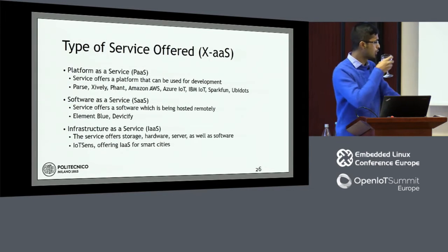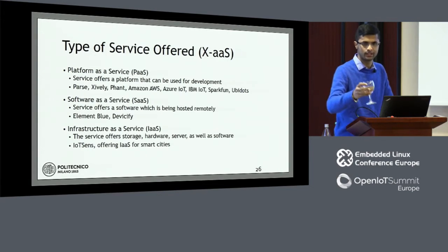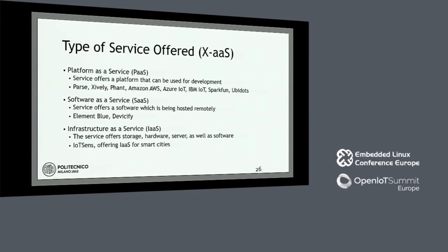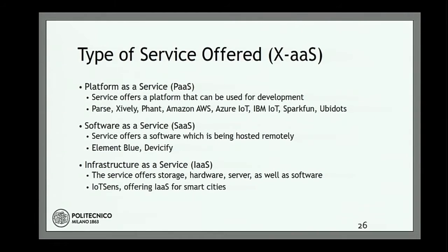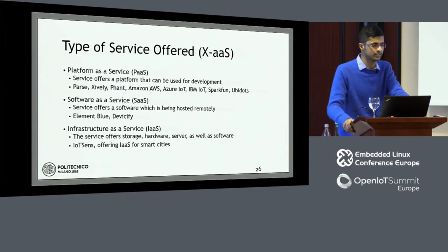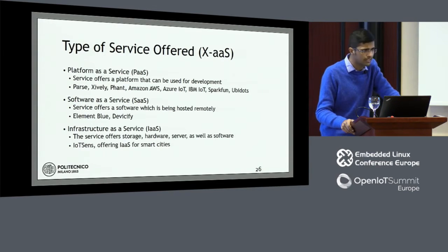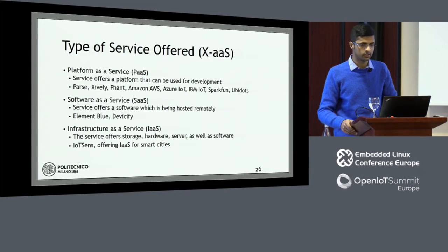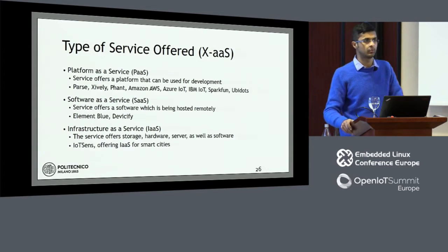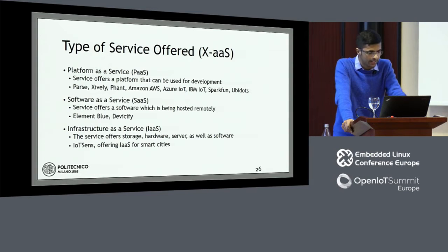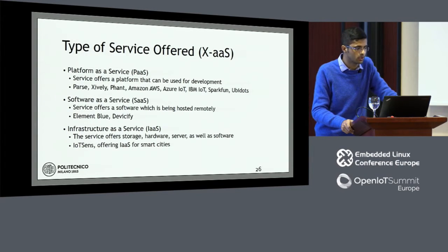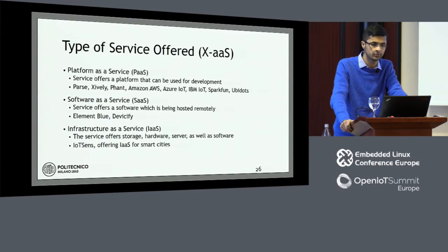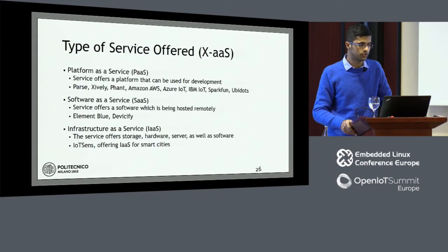We can also classify services by type. Platform as a Service: data is sent to a platform and you build an application on top — examples include Amazon AWS, Azure, and Parse. Software as a Service: a hosted software acts as a black box, you send data and get an output — examples are ElementBlue and Deviceify, which offer different software for monitoring water flow or smart grid networks.